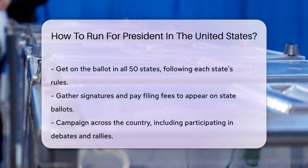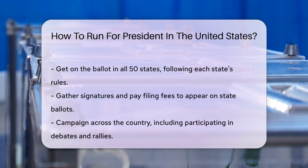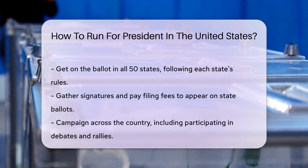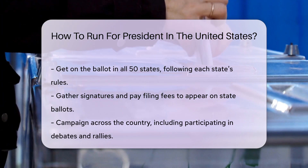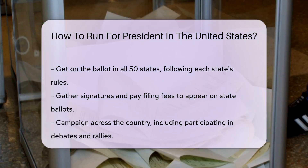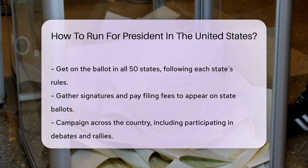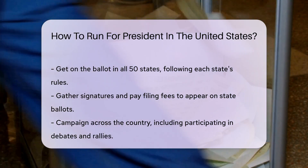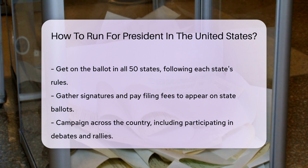Each party has a national convention where the nominee is officially chosen. You must also get on the ballot in all 50 states. Each state has different rules for this, and you will need to gather signatures and pay filing fees.